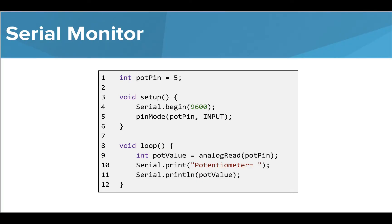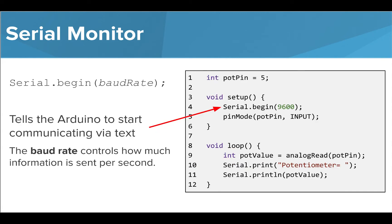We learned that there are some commands we can use to control the serial monitor. The first command we need to include in our program goes inside the setup function. We write Serial.begin and place 9600 inside the parentheses.